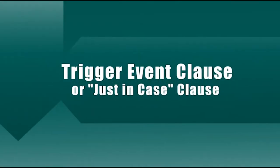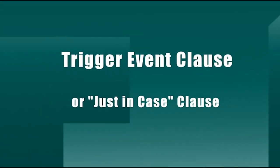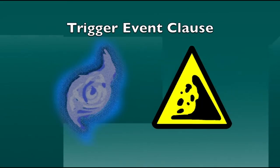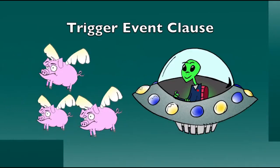Another type is a trigger event clause, or just-in-case clause. Attorneys can add a myriad of clauses to cover every possible issue — from violations of any lease portion to what happens in the event of a fire, flood, hurricane, landslide, nuclear war, flying pigs, or an alien attack. These clauses outline the rights of both landlord and tenant and the remedies available to the injured party. Common ones include a default clause, breach clause, and damage or destruction clause.